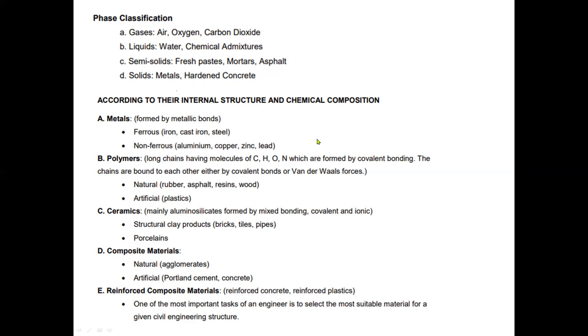Ceramics: mainly aluminosilicates formed by mixed bonding, covalent and ionic. Structural clay products are bricks, tiles, and pipes, and of course porcelains. Screening materials: natural means agglomerates and sand. We have portland cement concrete and reinforced composite materials: reinforced concrete or reinforced plastics.